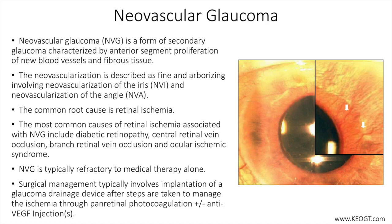When vascular proliferation occurs, signifying transition to the rubeosis phase, it is observable by slit lamp biomicroscopy, typically at the pupillary margin. When NVI is observed, careful gonioscopy is necessary to identify any NVA and to quantify any existing fibrovascular membranes or peripheral anterior synechiae.